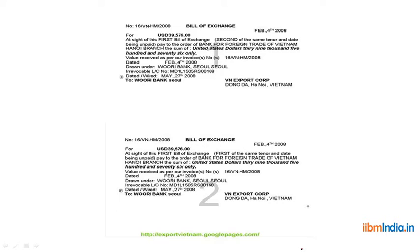A sample bill of exchange looks like this — for USD 39,576: 'At sight of this first bill of exchange, second of the same tenor and date being unpaid, pay to the order of Bank for Foreign Trade of Vietnam, Hanoi Branch, the sum of United States Dollars thirty-nine thousand five hundred and seventy-six only, value received as per invoice.' Dated 4th February 2008, drawn under Woori Bank, Seoul, irrevocable LC.